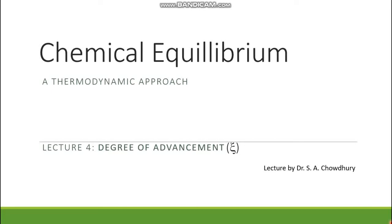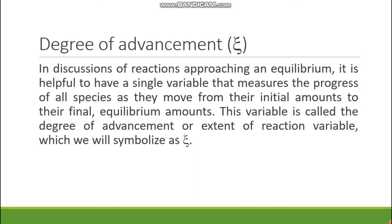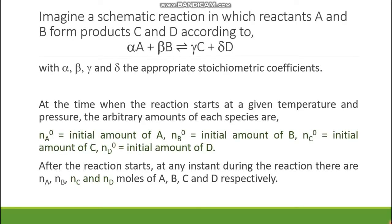In the fourth lecture of chemical equilibrium, we are going to discuss a very important key factor of this chapter, known as the degree of advancement, or Xi. Xi is the Greek letter X. In discussions of reactions approaching equilibrium, it is helpful to have a single variable that measures the progress of all species as they move from their initial amounts to their equilibrium amounts. This variable is called the degree of advancement or extent of reaction, symbolized as Xi.